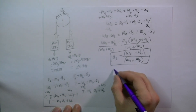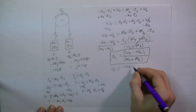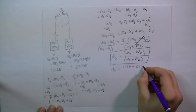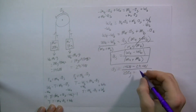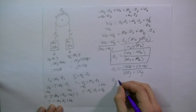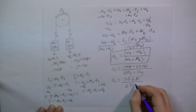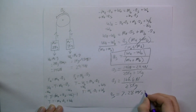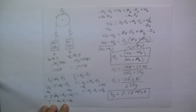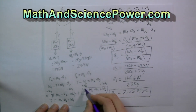Let's plug in our numbers and solve for the acceleration of the system. The acceleration of the system equals the weight of A, which is 196 newtons, minus the weight of B, which is 29.4 newtons, divided by the mass of A, 20 kilograms, plus the mass of B, 3 kilograms. We get 166.6 newtons divided by 23 kilograms. When we divide newtons by kilograms we get our acceleration: 7.28 meters per second squared. You can then solve for the tension by plugging your acceleration back into the tension equation.